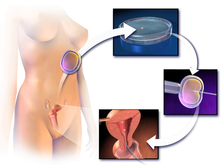Assisted Reproductive Technology are medical procedures used primarily to address infertility. It includes procedures such as in vitro fertilization, intracytoplasmic sperm injection, cryopreservation of gametes or embryos, and or may involve the use of fertility medication. When used to address infertility, it may also be referred to as fertility treatment.